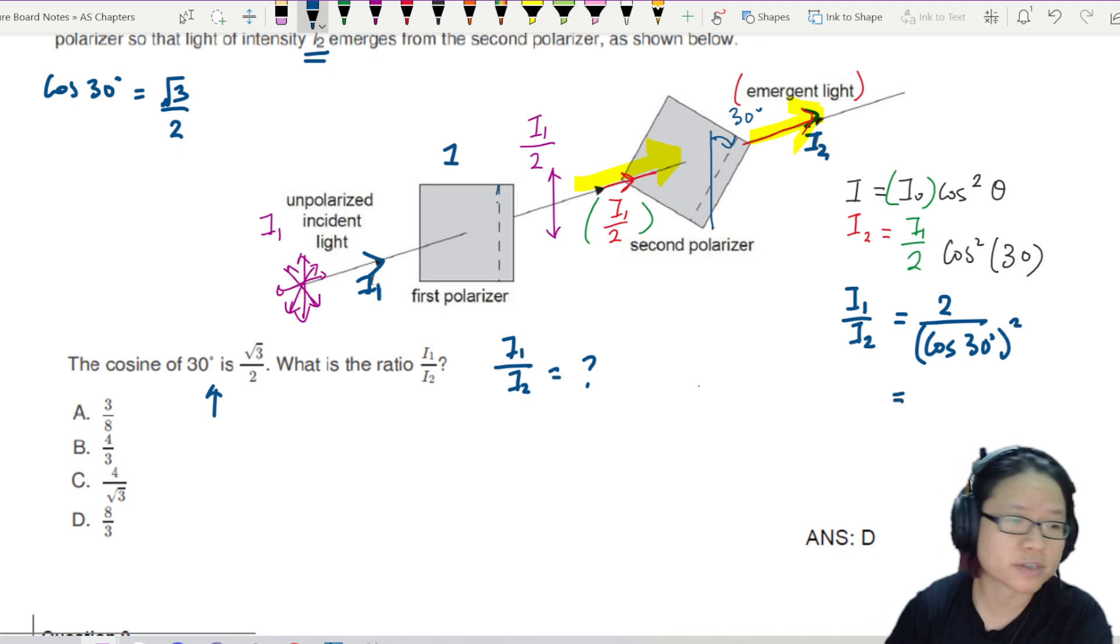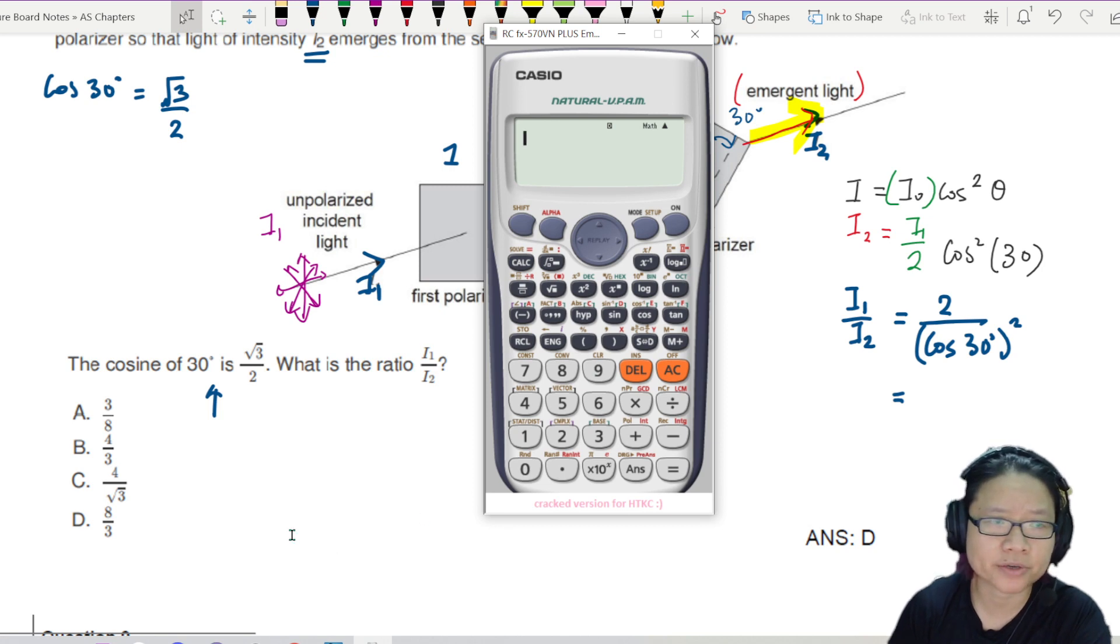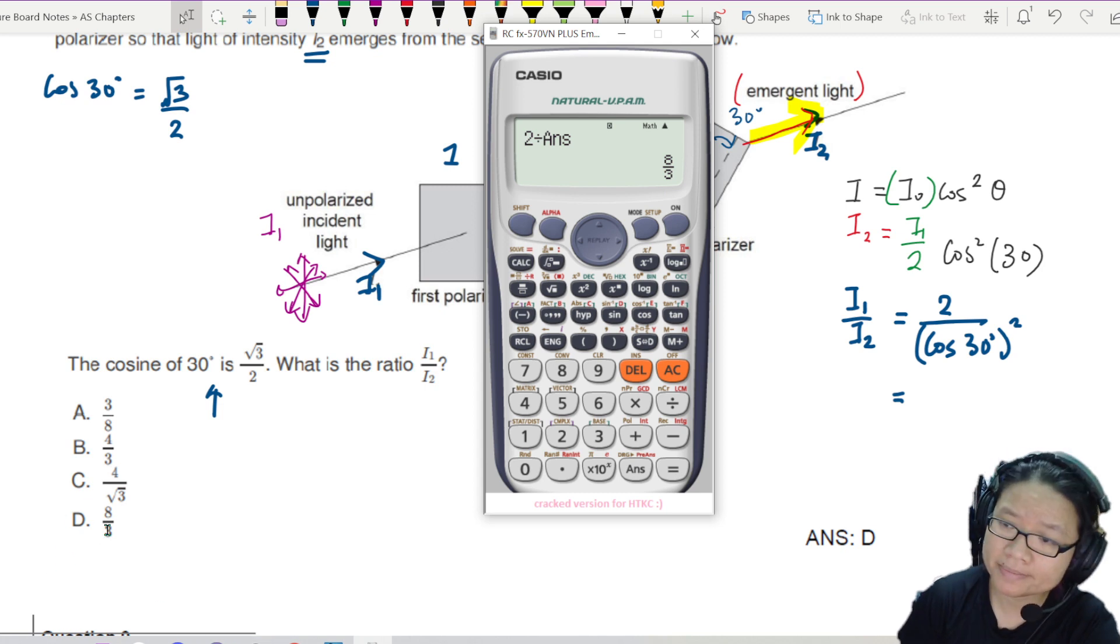So of course you can press calculator. If you don't want to do algebra and you're always scared that something is going to happen, it's okay to use your calculator. No harm. So this is 3 over 4. And then I'll take 2 divided by answer. I'll get 8 over 3. My answer is D.